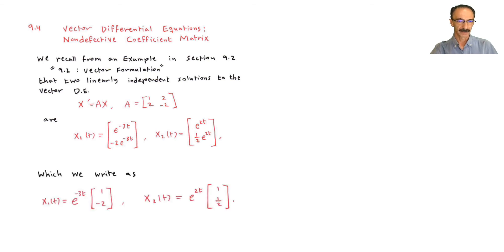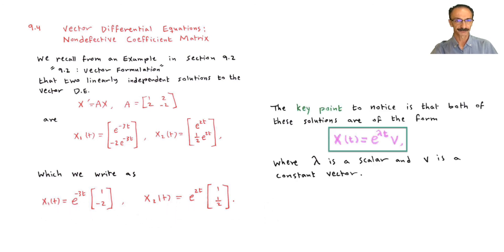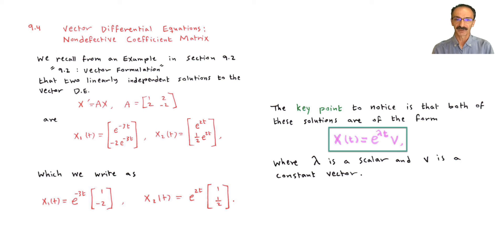We write this as follows — you remember this from when we started with lambda and v. The key point is that both of these solutions are of the form x(t) = e^(λt) · v, where lambda is a scalar and v is a constant vector. That's another way to write solutions.